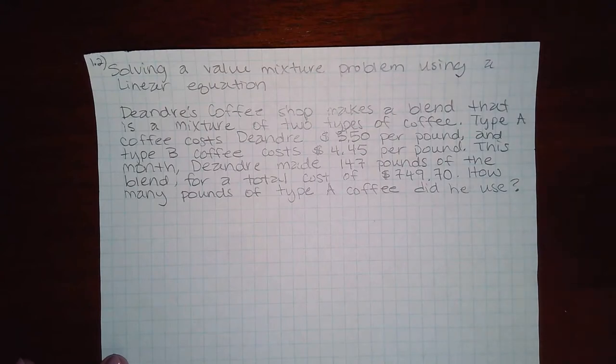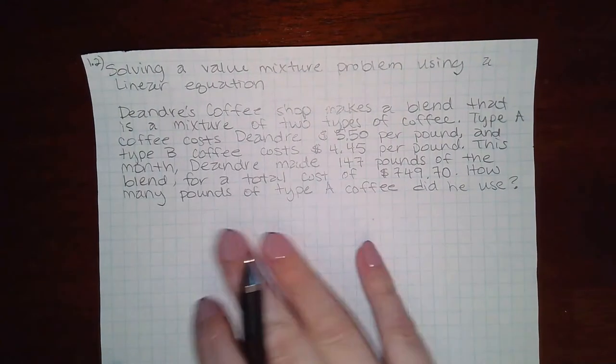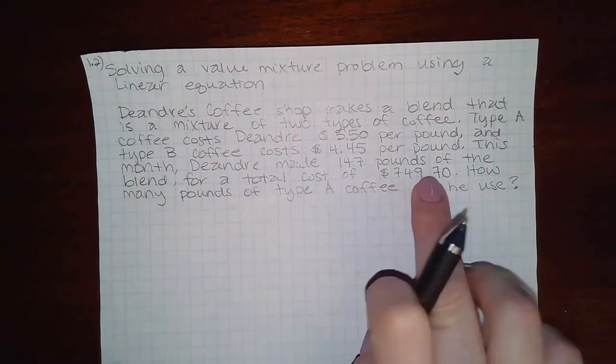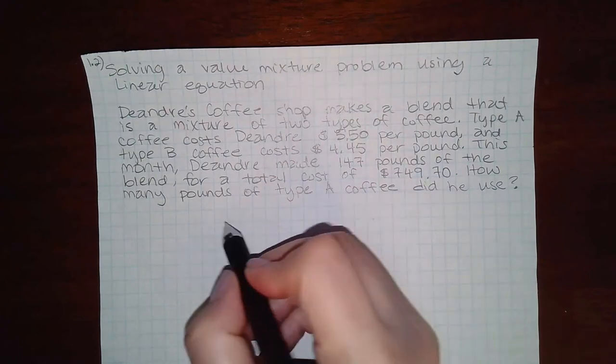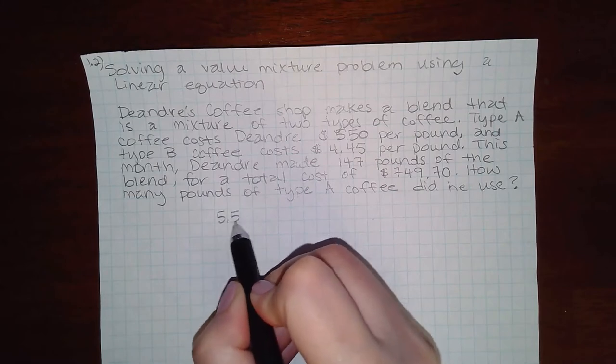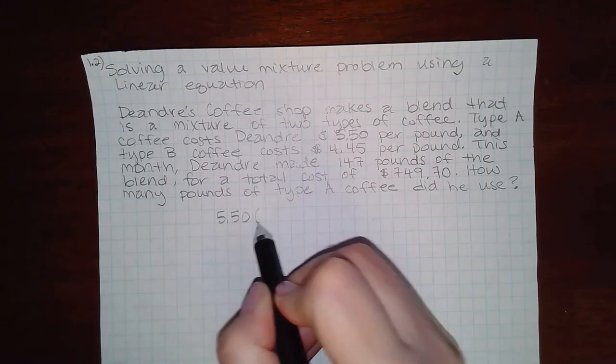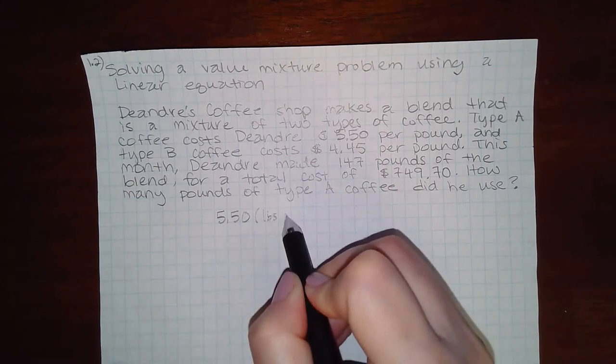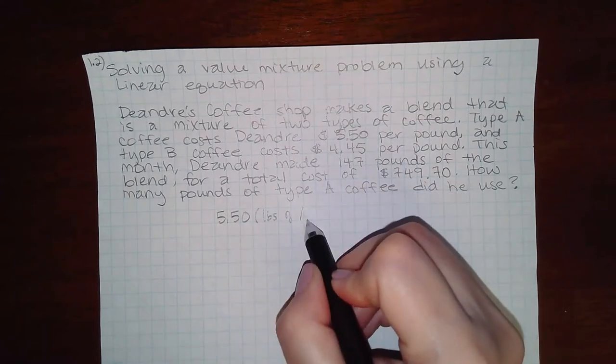How many pounds of type A coffee did he use? So in order for us to figure out this total that they gave us, we would need to have type A costs $5.50. So it would be $5.50 times the number of pounds of type A,